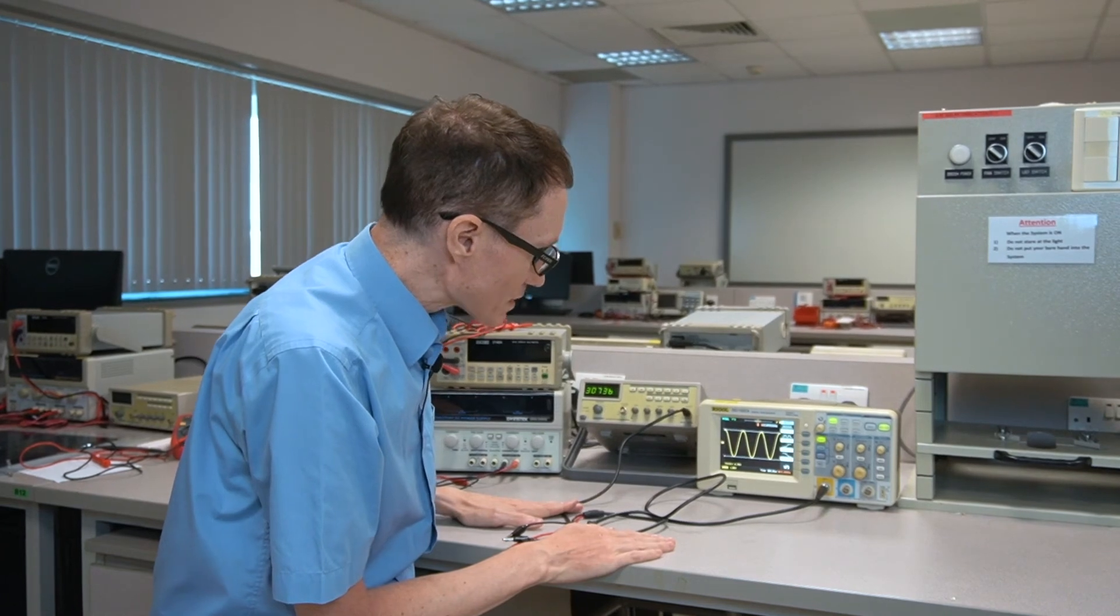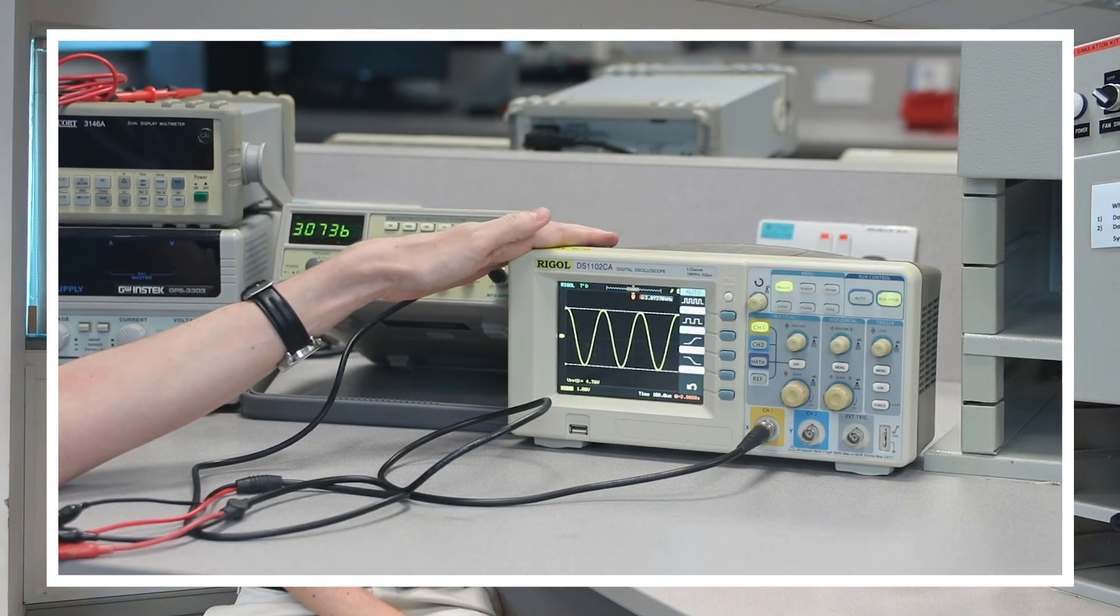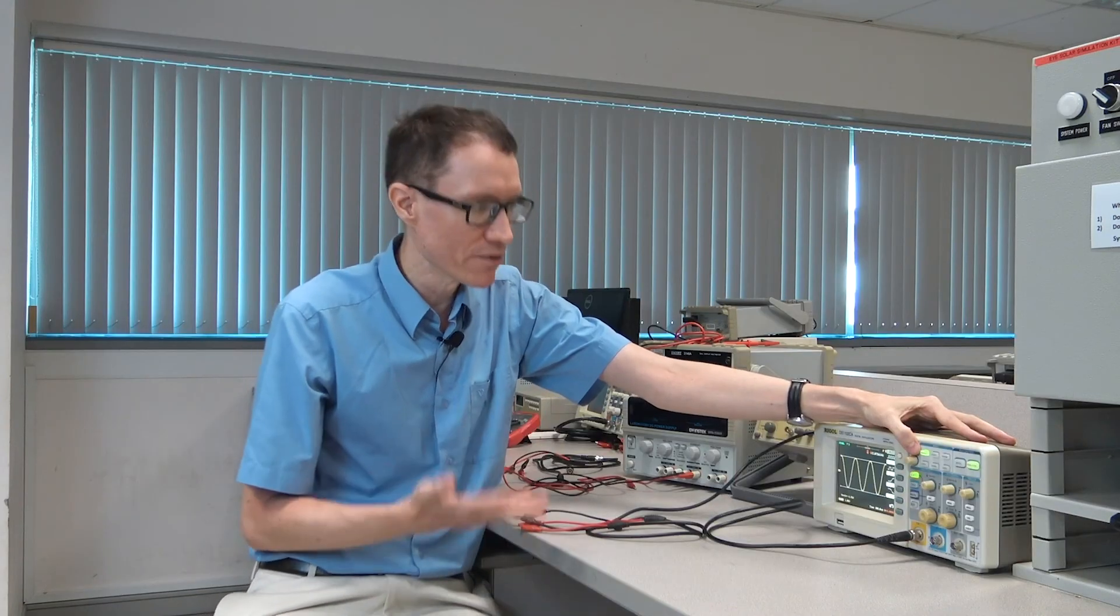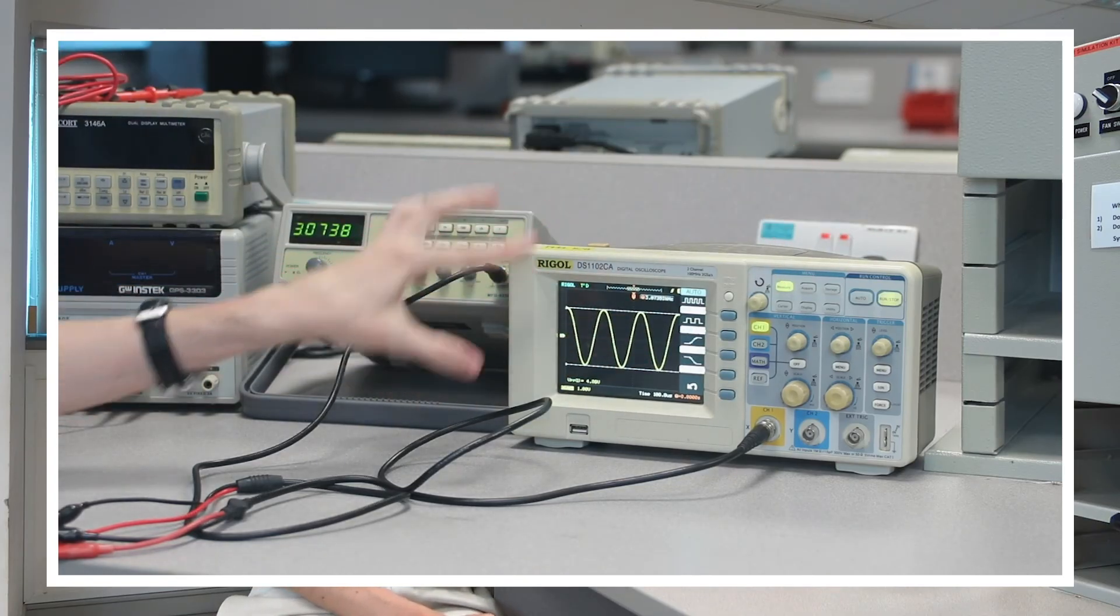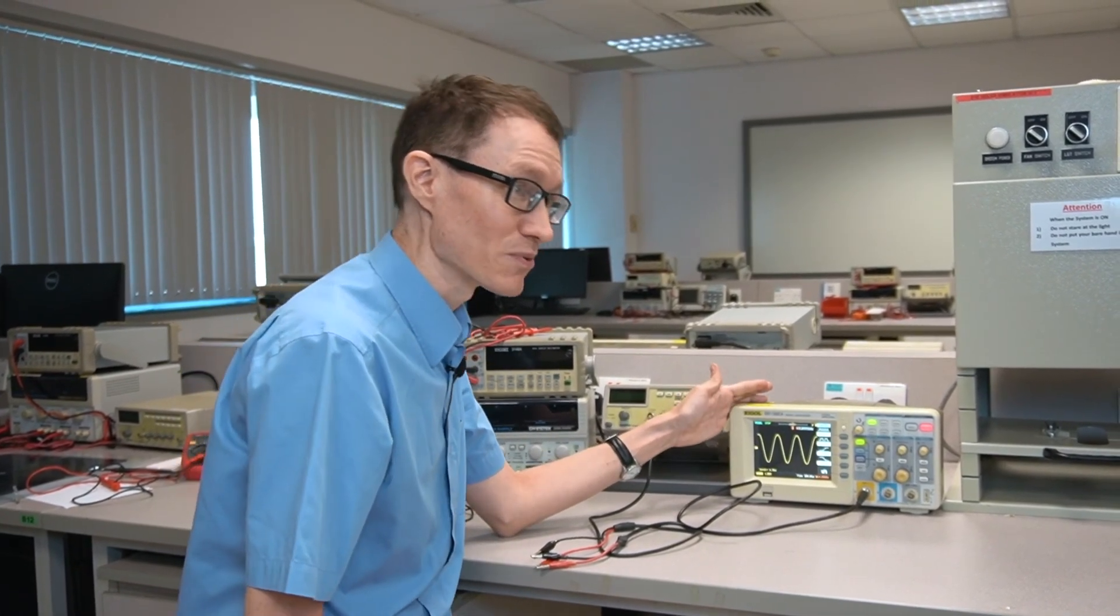I think that pretty much wraps up most of the basic functionality of the oscilloscope. Now, it has a lot of other functions here. With the measure menu, you can measure period. You can put a cursor on it and roll it around and find out where any particular point is on the signal. But a lot of this extra functionality is easier to explore with hands-on operation. In any case, I hope the video has given you a useful introduction to both of these pieces of equipment.